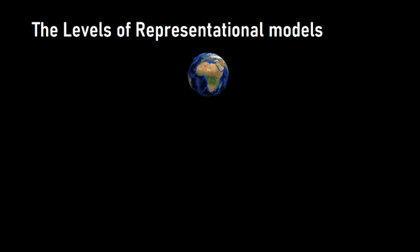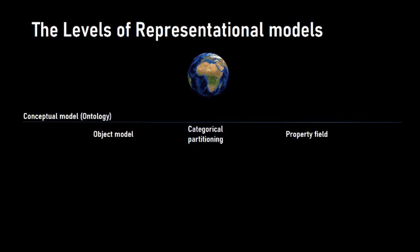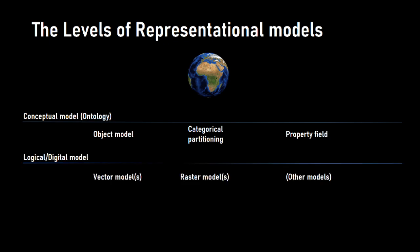We look at raster data within the element of representational models. If we take this globe as representing our reality, we had earlier talked about conceptual models where we create our ontology. We had basically three types: object models, where we have a thing like a road, a car, or a forest fire; categorical partitionings, where some property is classified such as soil, pollutants, or salinity; and property fields, where something varies continuously such as elevation, temperature, or air pressure. All of these conceptual models are analog in nature — they don't make objects discrete. The next level is our logical or digital models.